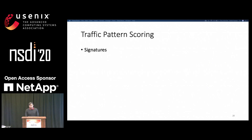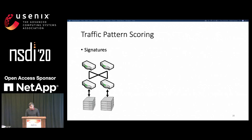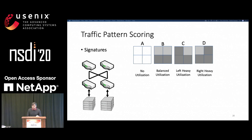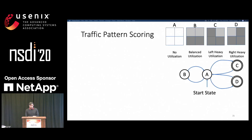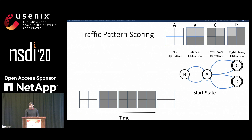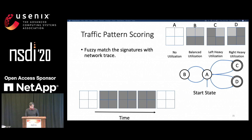The final component is traffic pattern scoring. In this part, we write signatures for known traffic patterns. The example here is of a traffic imbalance case where either the right side or left side of the spine has much more load than the other. The letter above each state denotes that particular state. We represent the signature using a state machine. We also have a network trace. If at any point our network trace reaches state C or D, which are the end states, we raise an alert. We do fuzzy matching of the trace against the signature, and if it matches, we raise an alert.